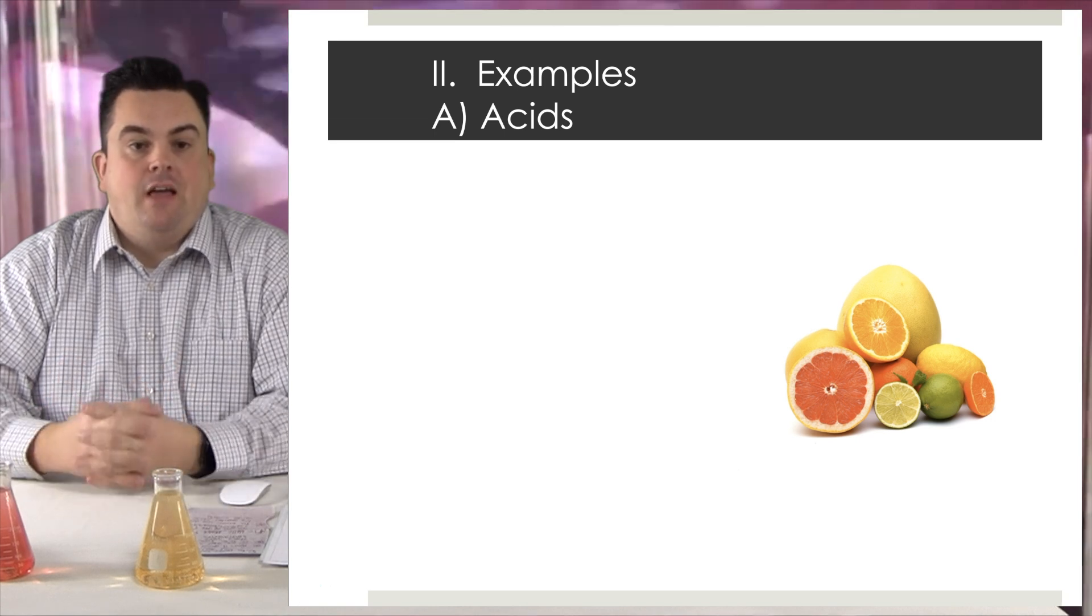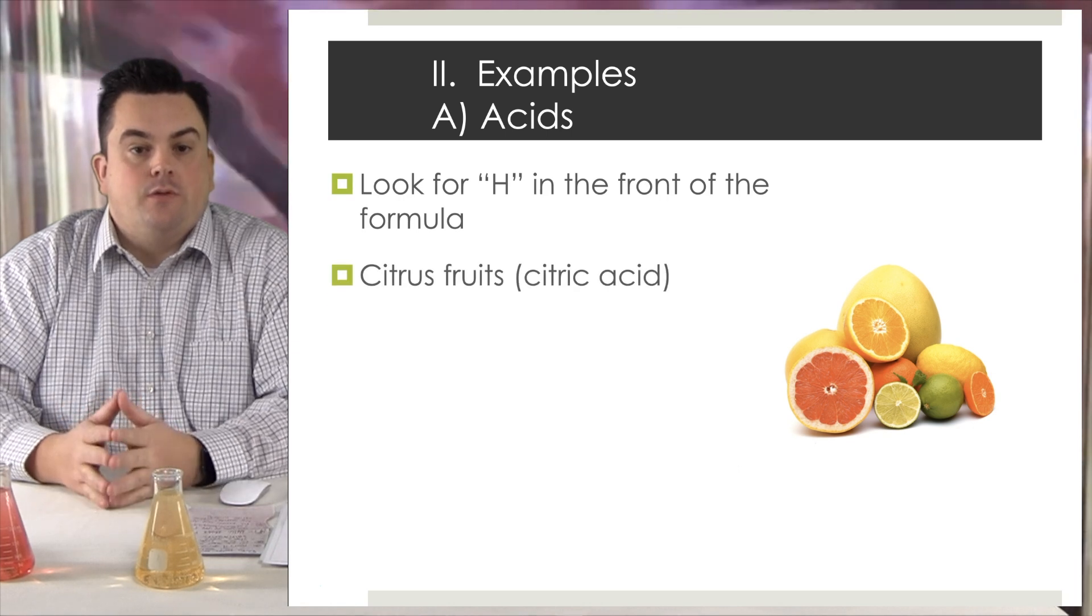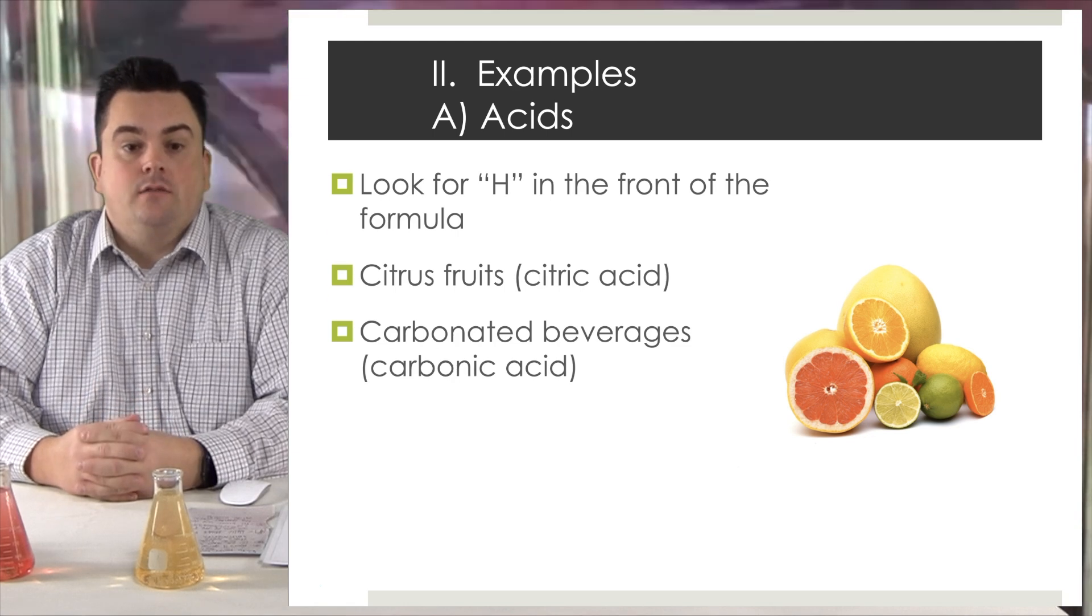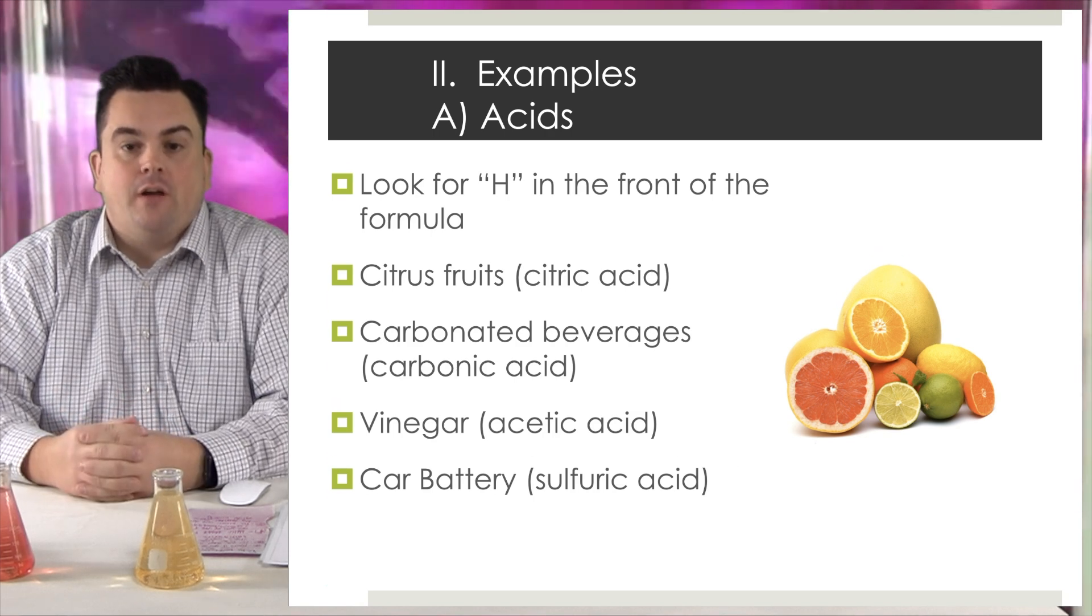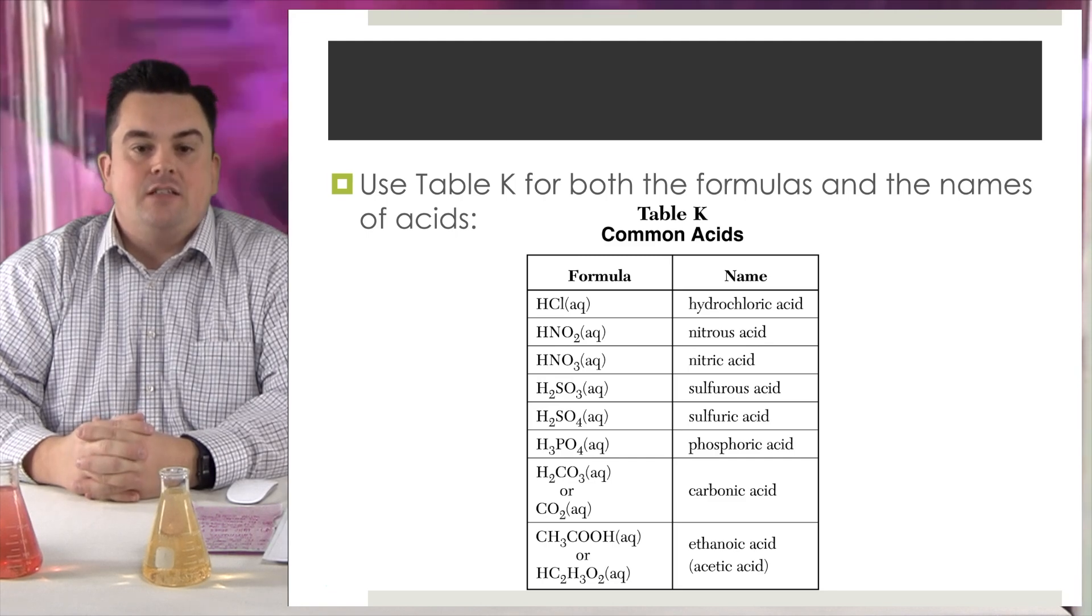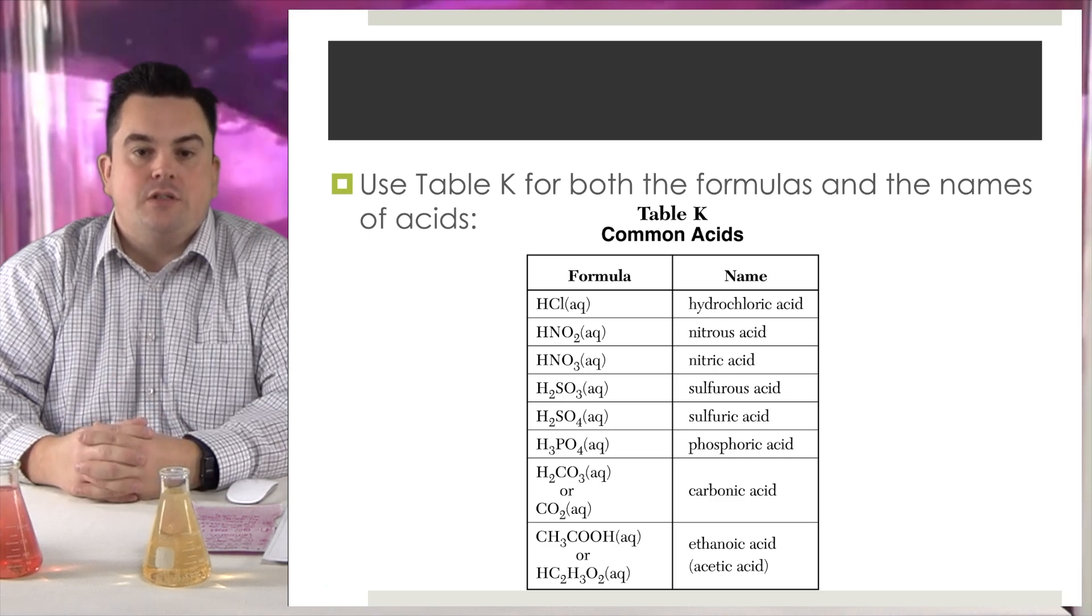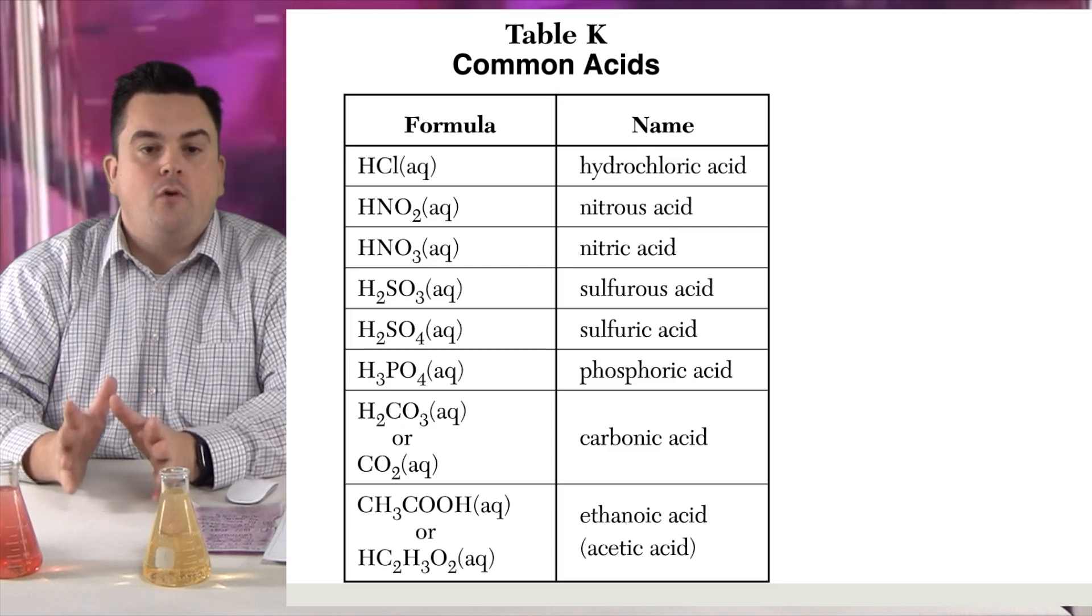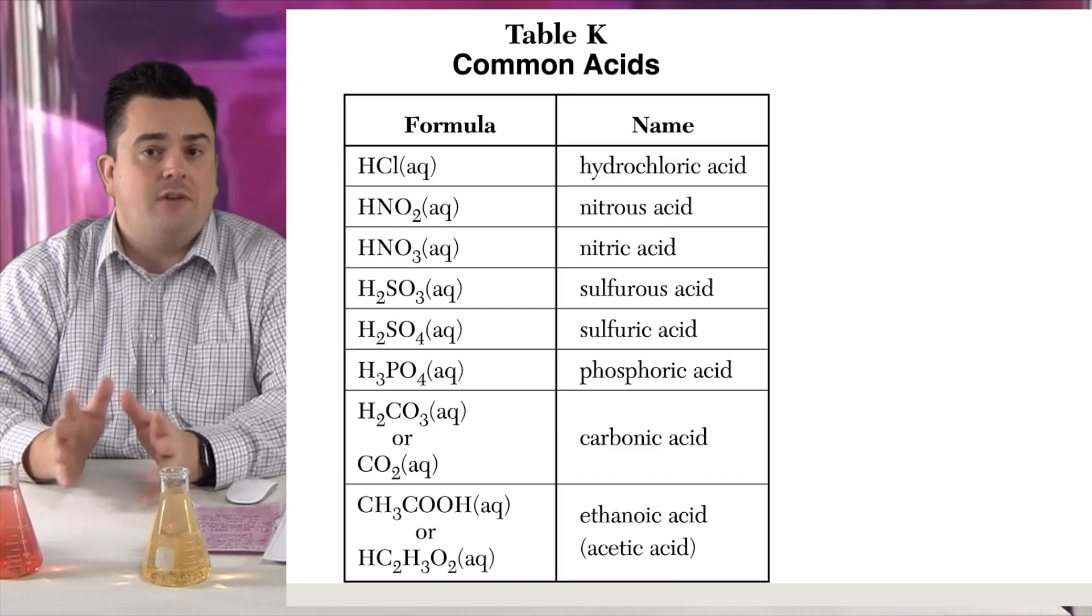Examples of acids. Look for H in the front of the formula. Citrus fruits have citric acid. Carbonated beverages have carbonic acid. Vinegar is acetic acid. A car battery has sulfuric acid. Use table K for both the formulas and the names of acids. Now taking a look at table K, this is a list of all the acids we're going to use this year. Now if you look at the first column where it says formula, you'll notice all the formulas have hydrogen, or the H, right in front for your acids. This is a dead giveaway that you have an acid.